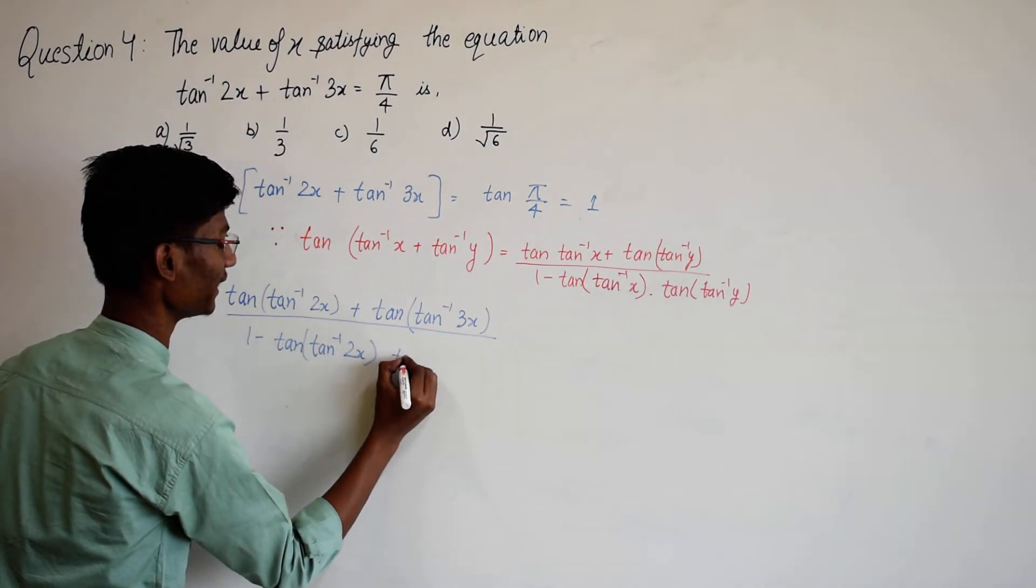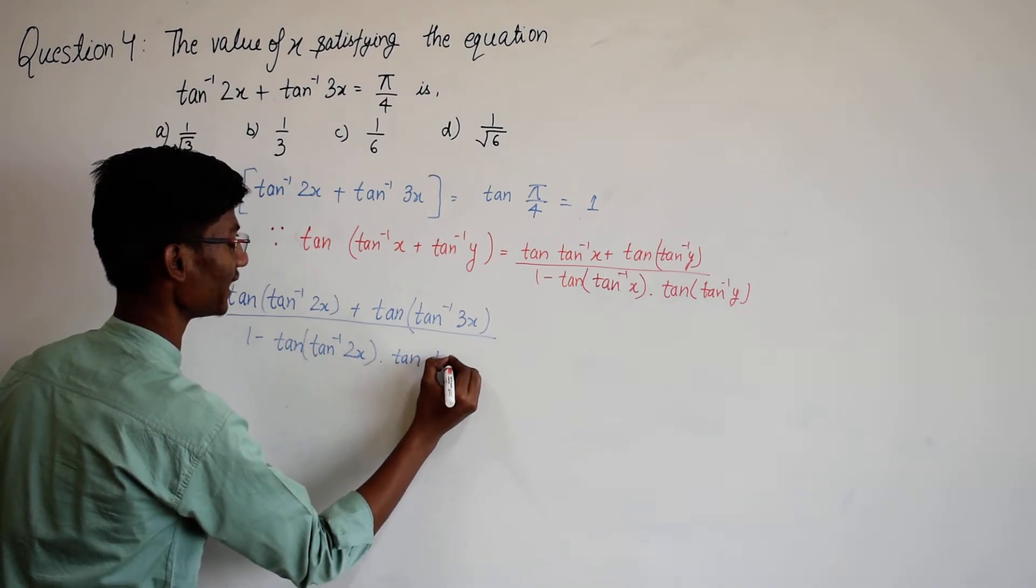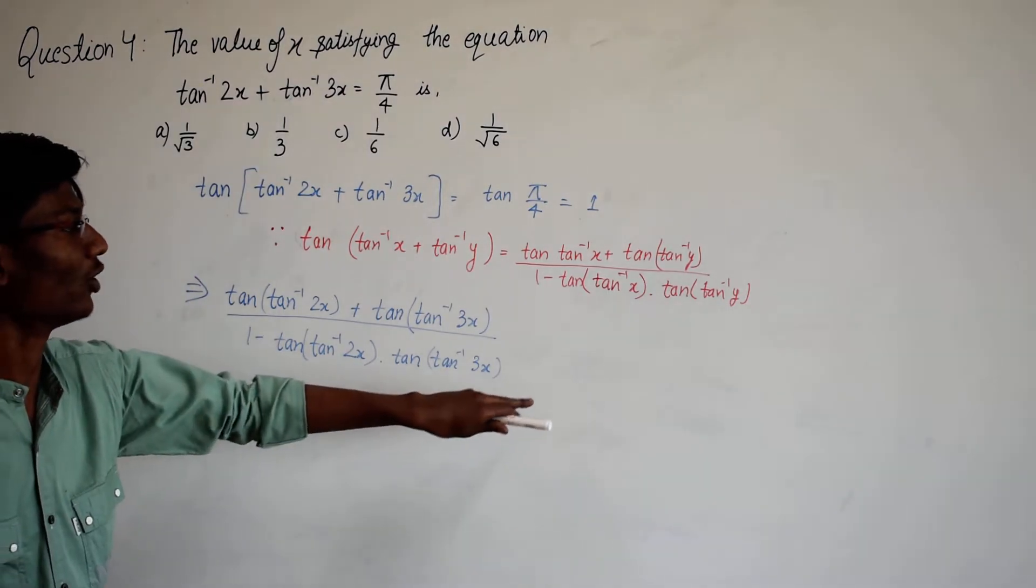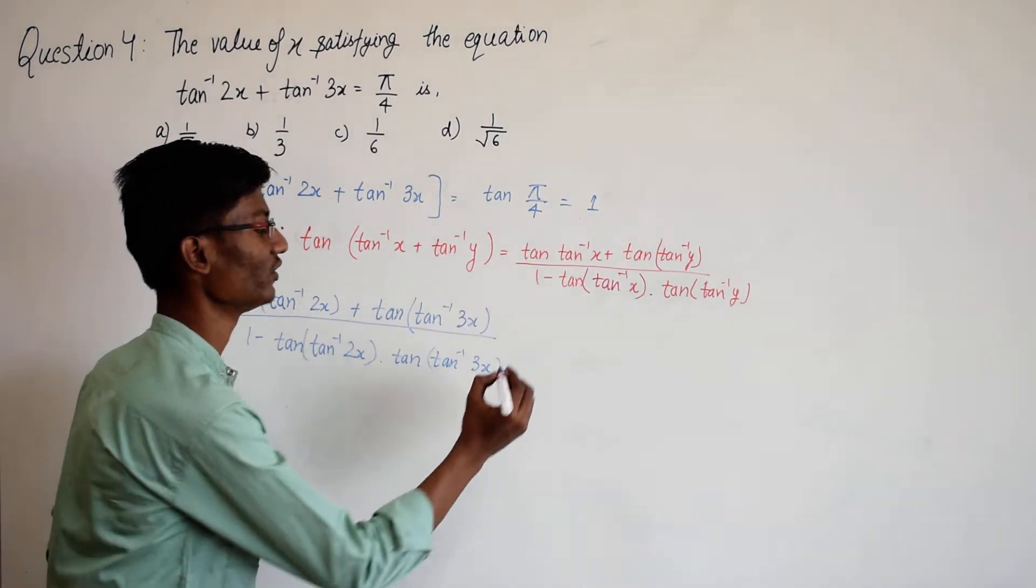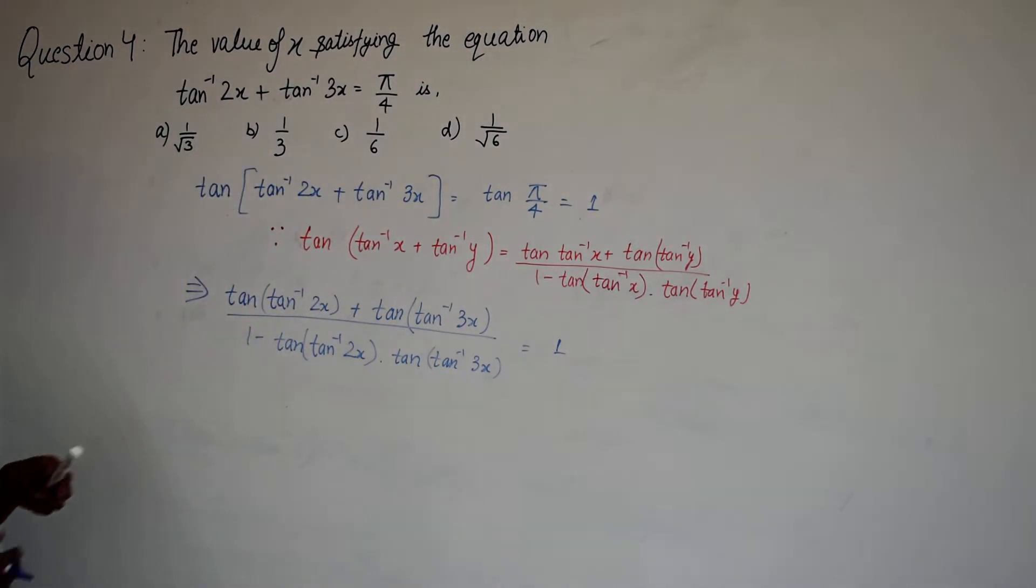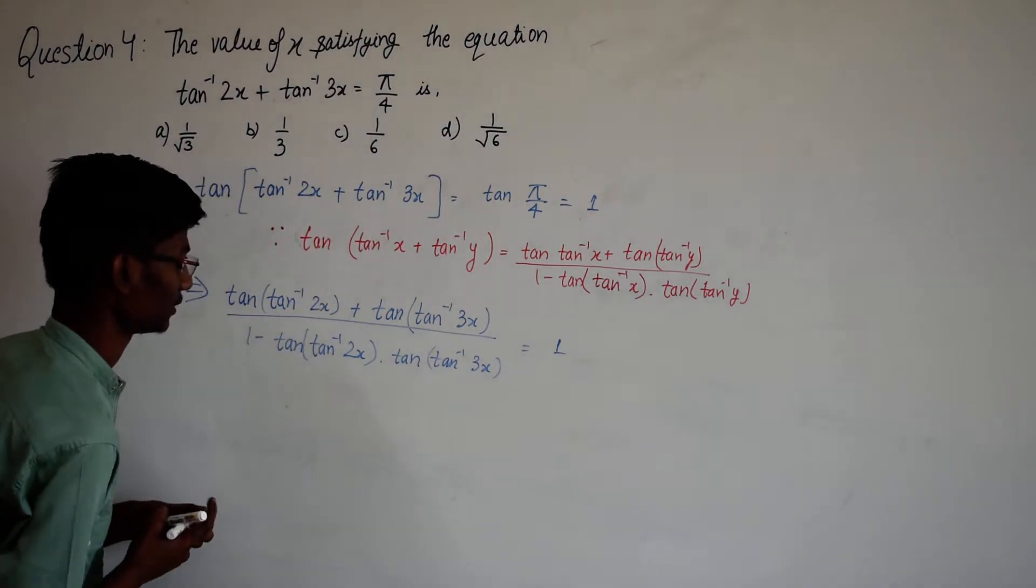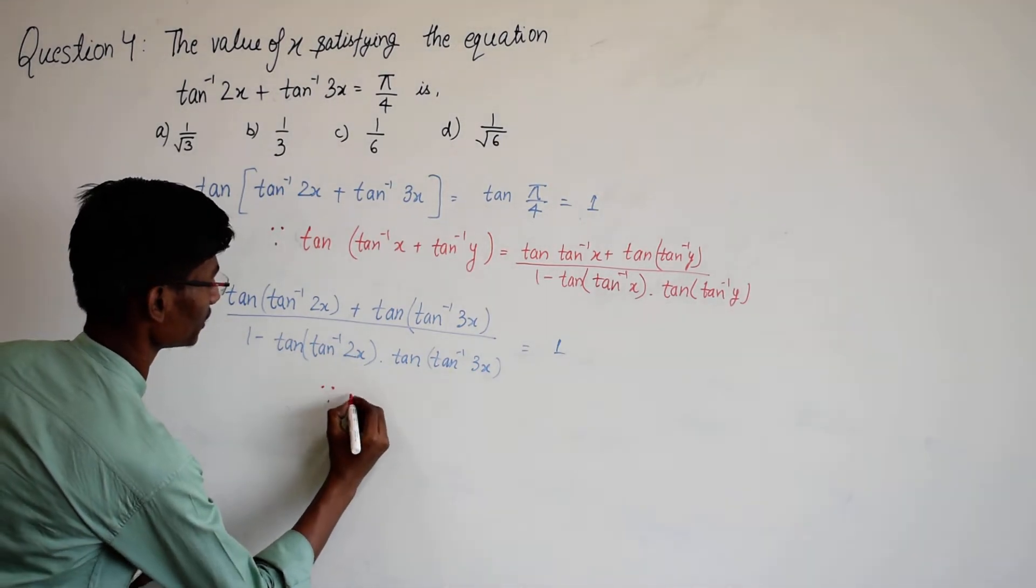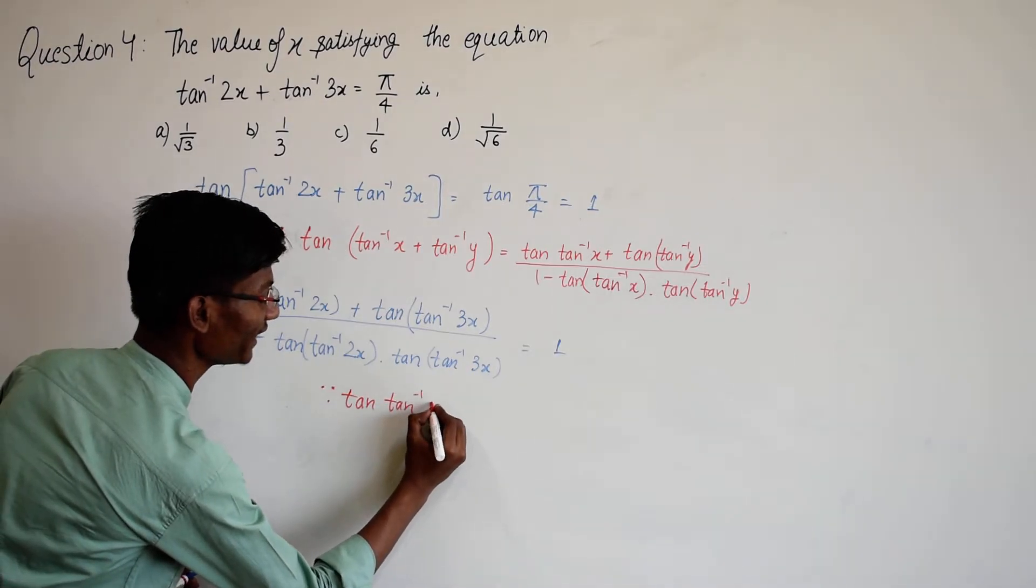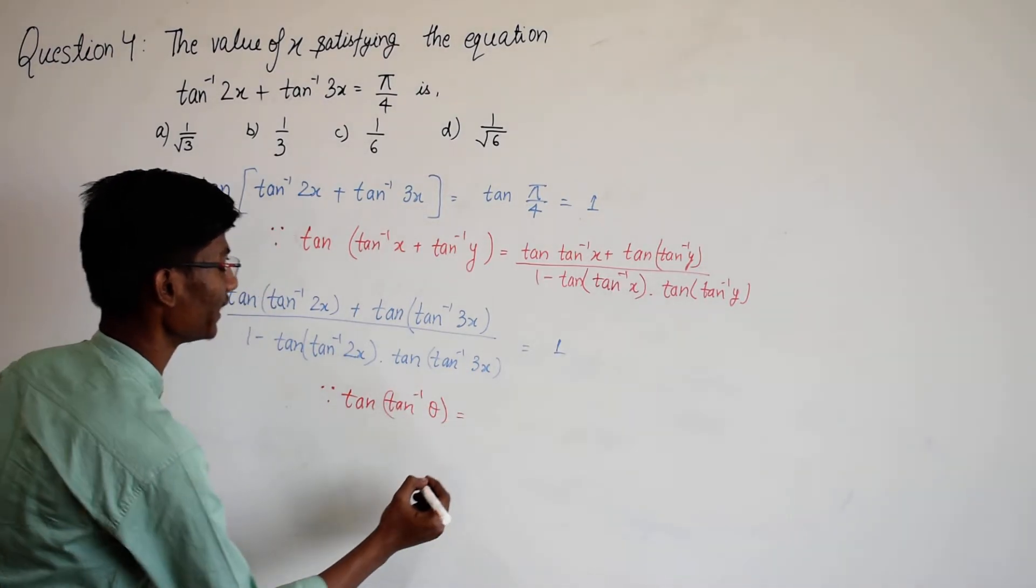Multiplied by tan of tan inverse 3x. And on the right hand side we have already got it is equal to 1. And we know that tan of tan inverse of any angle is equal to the angle.